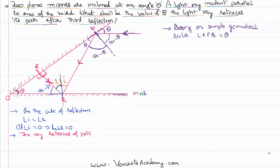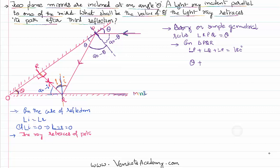Now in triangle PQR, the sum of all angles equals 180 degrees. Angle P is theta, angle Q is 2i, and angle R is 90 degrees. Therefore theta plus 2i plus 90 equals 180, which gives us theta plus 2i equals 90 degrees. That is our first equation.